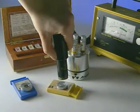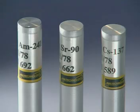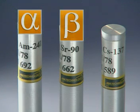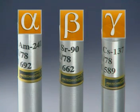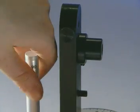There are three different types of nuclear radiation: Alpha, Beta and Gamma. Each has a different penetrating power.